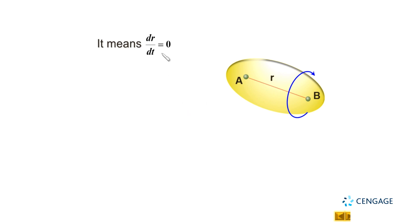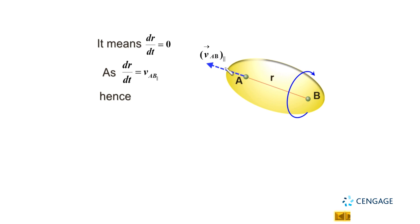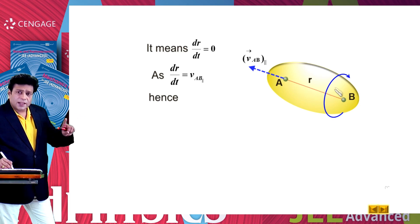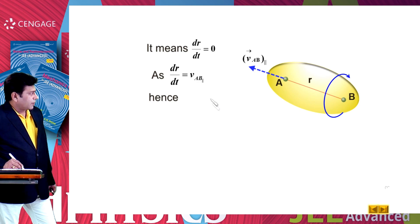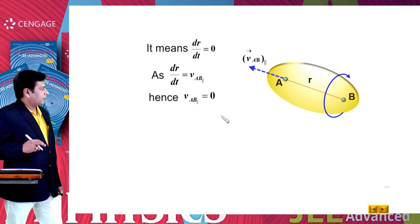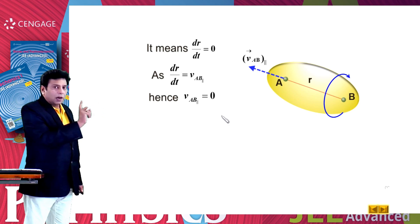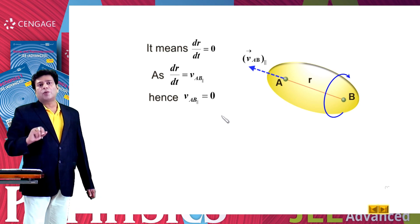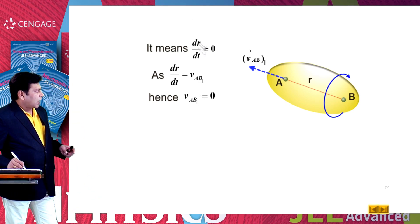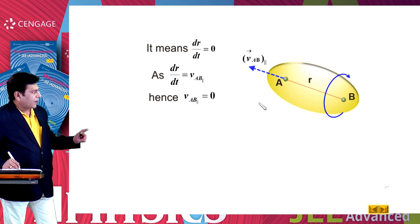We can write dr/dt = V_AB parallel, that is the relative velocity of A with respect to B along the line joining AB. Since this distance is not changing, V_AB parallel should be equal to 0. If V_AB parallel is 0, it does not mean that the vector V_AB is equal to 0, because dr/dt is not equal to d(r-vector)/dt.